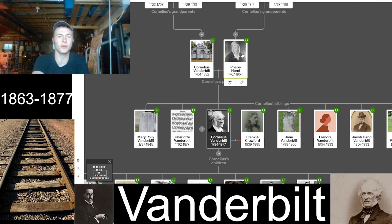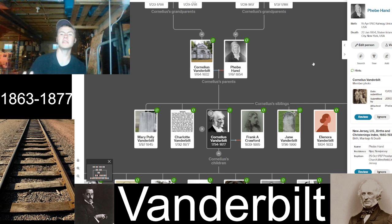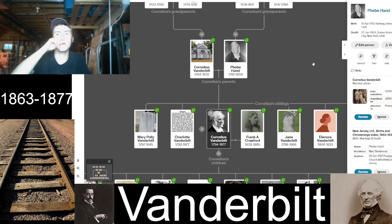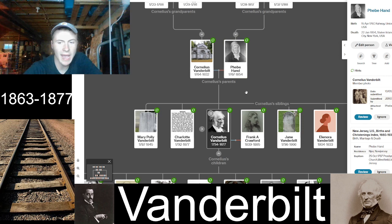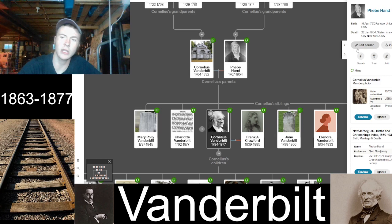Cornelius Vanderbilt's mother was Phoebe Hand. She was born on April 15th, 1767, in Rahway, Union County, New Jersey — interestingly, today is her birthday! She died on January 22nd, 1854, in Staten Island, outliving a couple of her children. Both of Cornelius Vanderbilt's parents were from New Jersey before moving to New York.